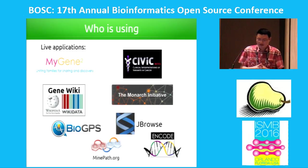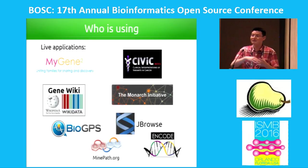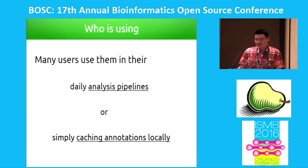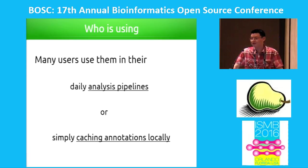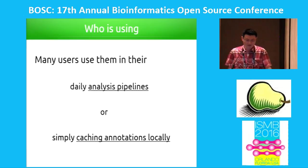We have good collaborators using our service in their live applications, for example MyGene and Monarch, and CIViC. I know Suki and Monica are here — we worked on getting the MyGene and MyVariant track into JBrowse at a hackathon earlier this year, which is really awesome. Even more users use our API in their daily analysis pipelines, and some people just use it as a quick way to cache all the gene and variant annotations locally so they don't have to parse all those files. That's totally fine, though we do prefer people use it as a live API.